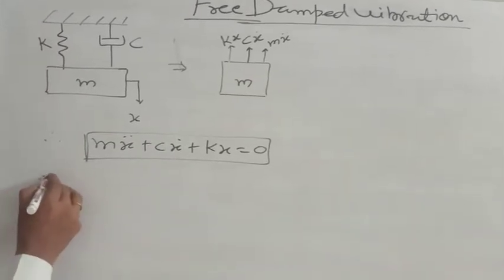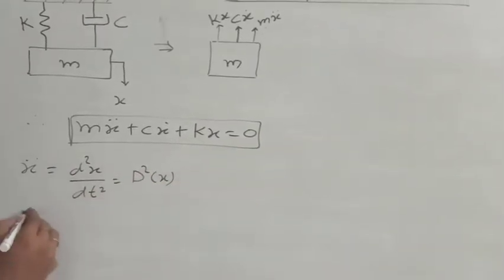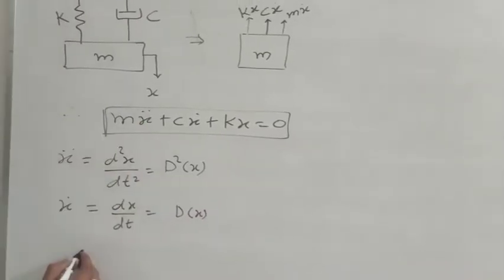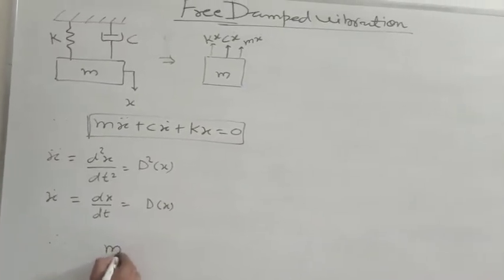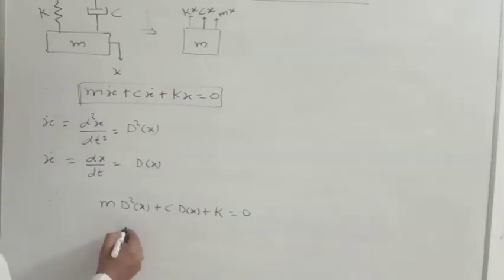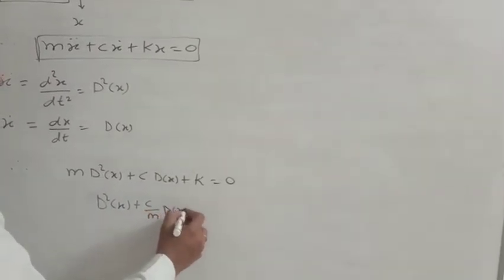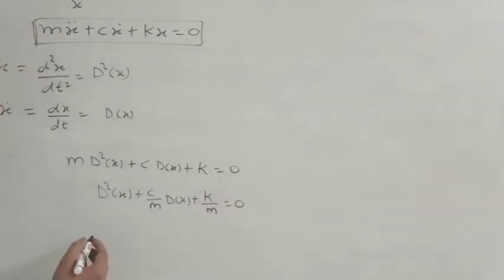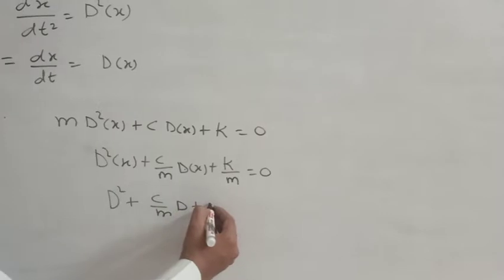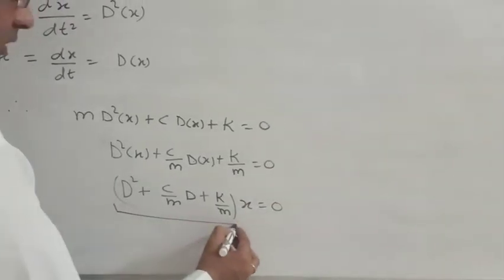This is the equation of motion. We know that ẍ is the second derivative of x, which we can write as D²x, and ẋ is the first derivative, written as Dx. Substituting these, the equation converts to: MD²x + CDx + K = 0, or D²x + (C/M)Dx + (K/M) = 0. This is the auxiliary equation.